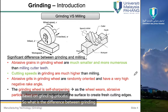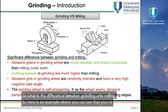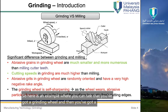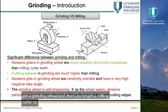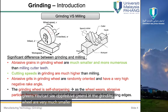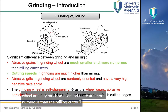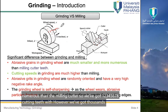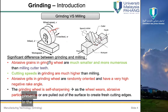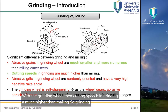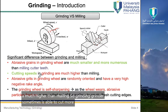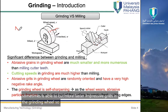What is the difference between grinding and milling? Abrasive grains in the grinding wheel are very much smaller and more numerous than the teeth of a milling cutter. A milling cutter may have six to eight cutting teeth, whereas a grinding wheel has thousands of cutting teeth in the form of abrasives. Cutting speeds in grinding are also much higher than in milling.